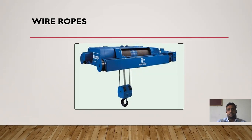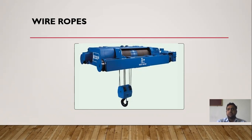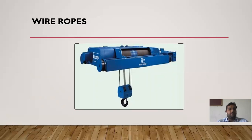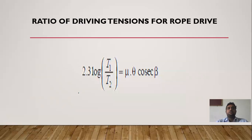Wire ropes are used for carrying heavy materials from one place to another. This type of arrangement is used in construction sites, and also for loading and unloading of machines. Wire ropes can transmit power from one pulley to another pulley and carry material over distances up to 150 meters. That is the basic advantage of wire ropes.